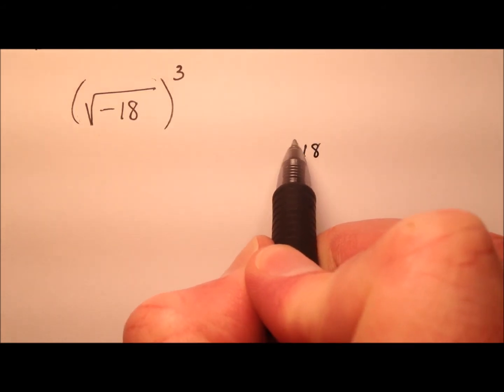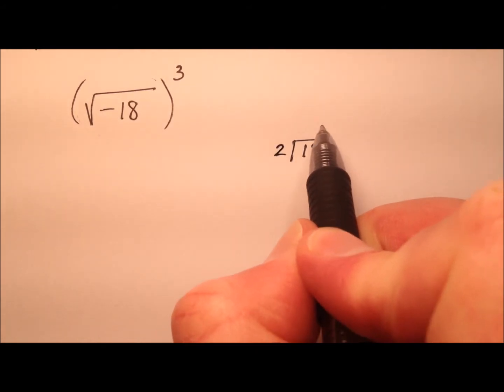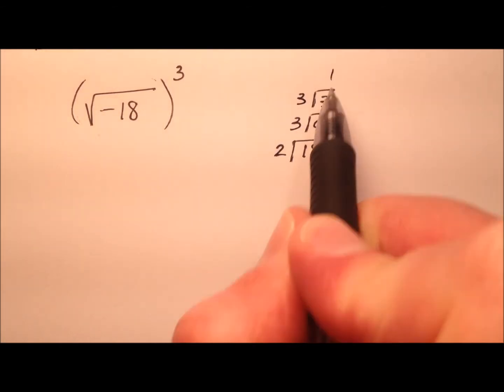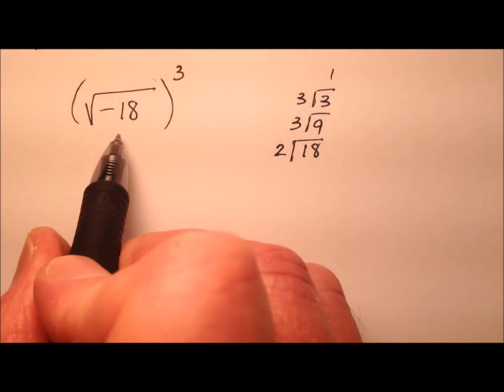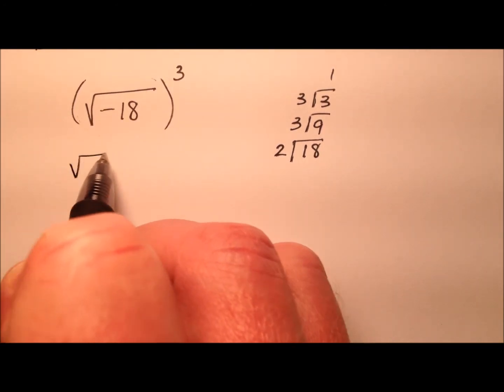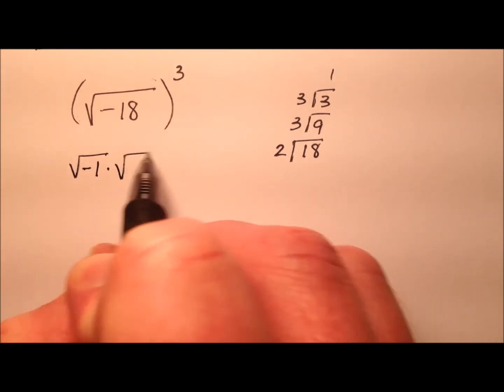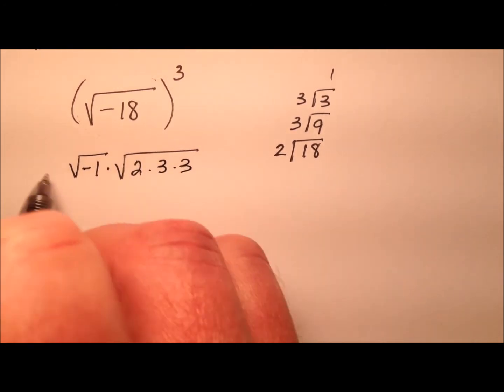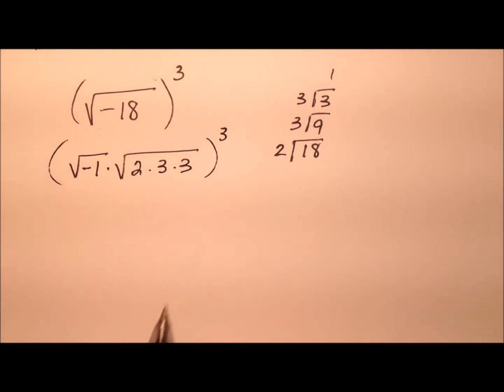So my 18 over here, I can reduce this radical. I can take a 2 out first, and then 9 is just 3 times 3. So I can rewrite this now as, since we have a negative underneath, the square root of negative 1 times the square root of 2 times 3 times 3, and all that's cubed.